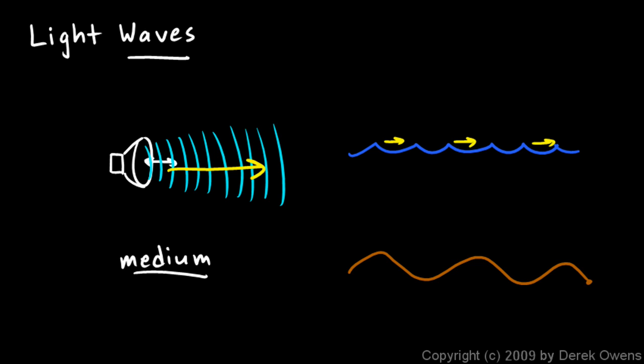And this doesn't mean medium like small, medium, and large. This is related to the word mediate, as in go-between, or the word intermediate. That's the name given to the material through which a wave travels. And just know that in each case, particles of the medium shake back and forth, but don't travel along as the wave does. It's the disturbance only, the wave itself, that's doing the traveling.